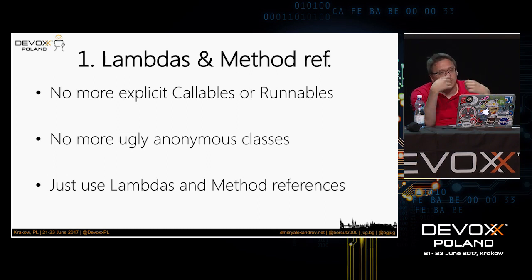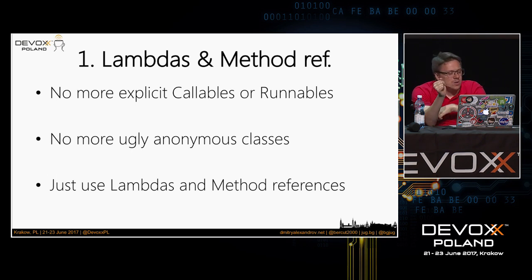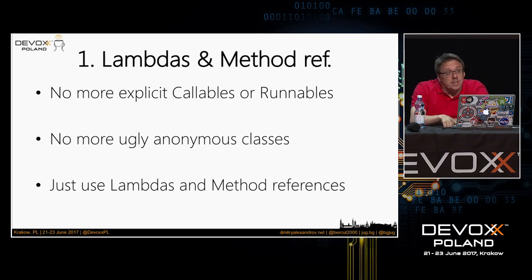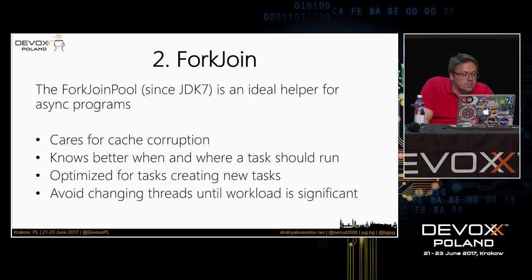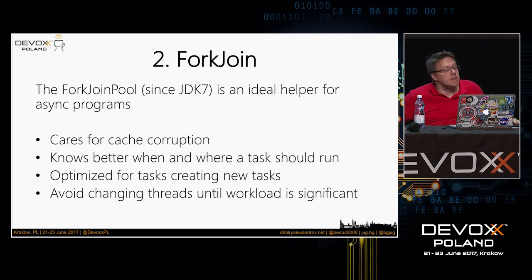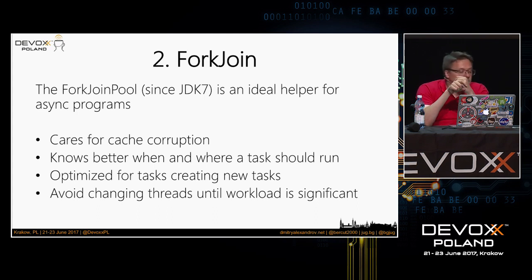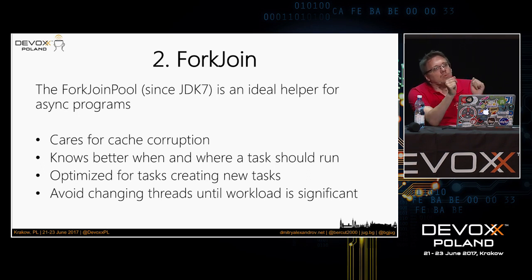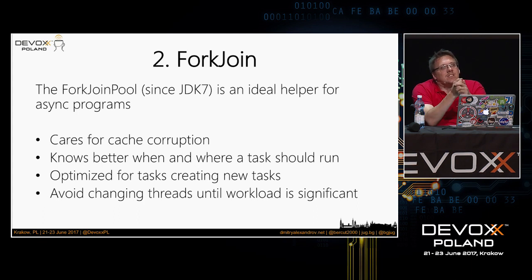To get to this class, we need to talk about some foundations. The first main foundation, which makes it easy to use these classes, is of course lambdas and method references. Java 8 had them and CompletableFuture benefits from them. As you saw in the Guava example, it was very hard to write something reasonable for callbacks. Here you just use lambdas and method references. The second big foundation came from Java 7: the Fork/Join thread pool became available and it became an amazing helper for asynchronous operations — it cares much about cache efficiency.